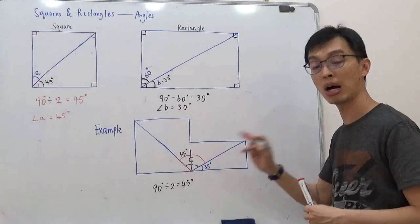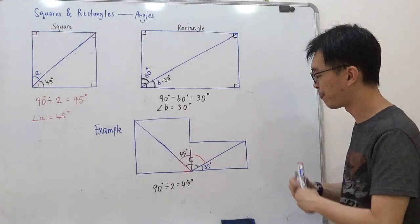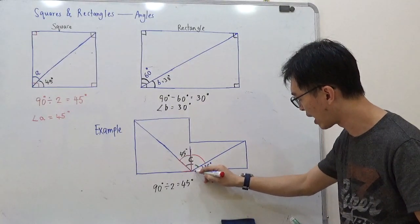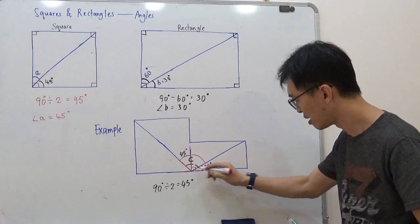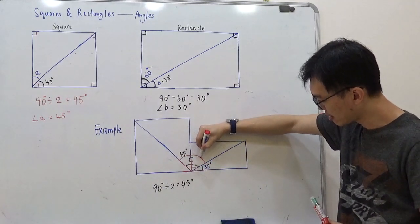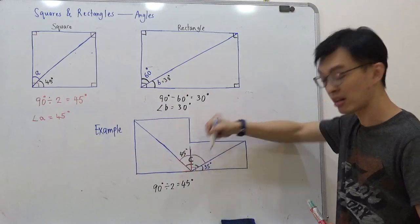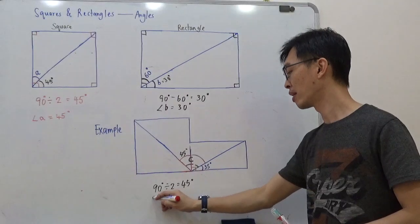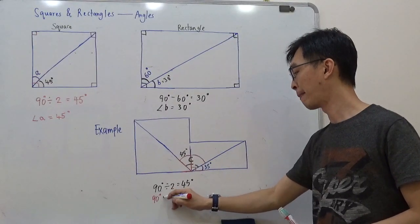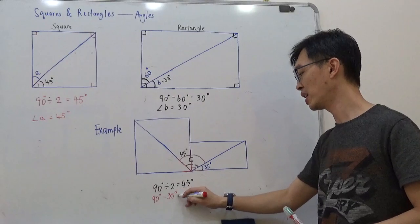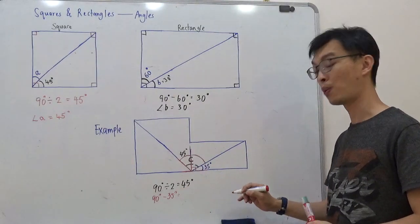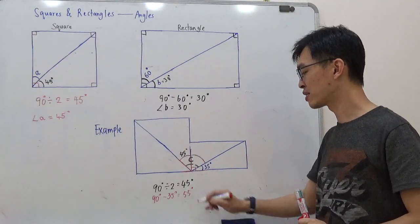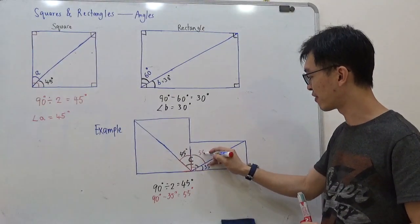Now what about this one, this one in red? How about this one? Look at this. This whole thing is a right angle. So this angle in red and this 35 should add up to be 90, right? So 90 minus 35 equals to, what is that? 55, right? So this is 55.